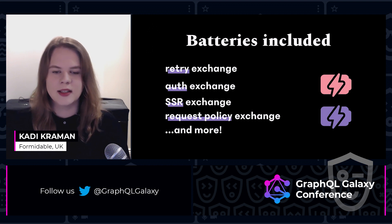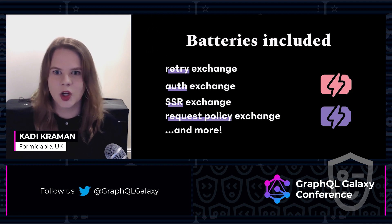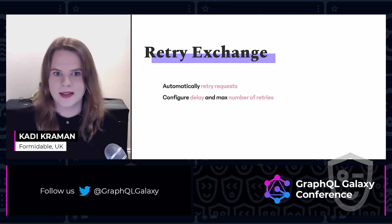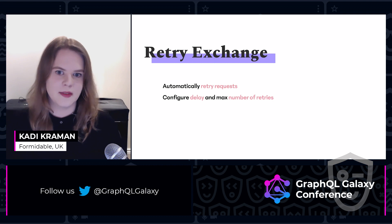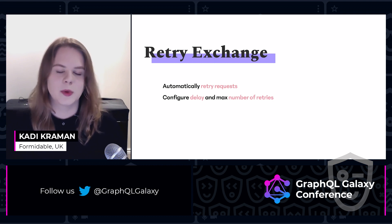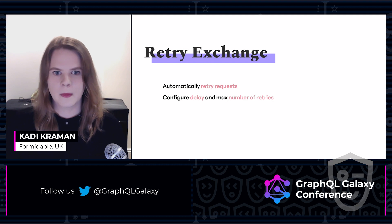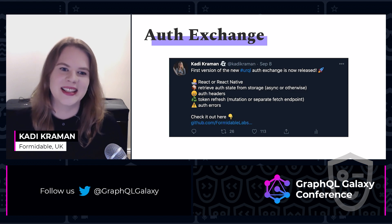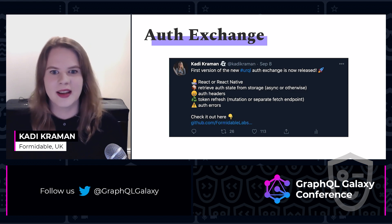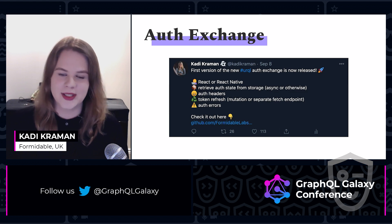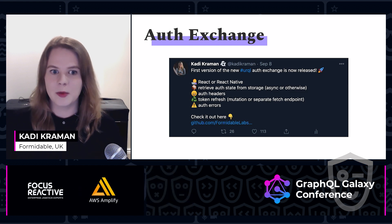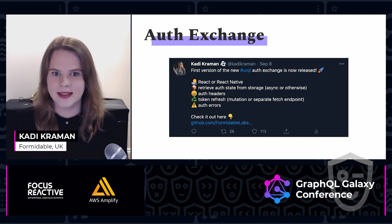We've had a look at the fetch exchanges, but let's have a glimpse at a couple more. One handy exchange is the retry exchange, which allows you to automatically retry requests. You can configure a delay — either a fixed value or a random value — and the maximum number of retries. And one close to my heart is the auth exchange. Authentication in GraphQL has been my pet peeve since forever. I've had to implement it several times, and it's always been painful. There's an additional difficulty in React Native compared to the web because token storage is asynchronous, which needs to be accounted for when fetching the initial auth state.